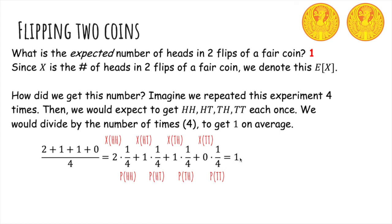And this actually equals one. So this is actually the sum over all outcomes of X applied to that outcome, because X is a function, times the probability of the outcome.